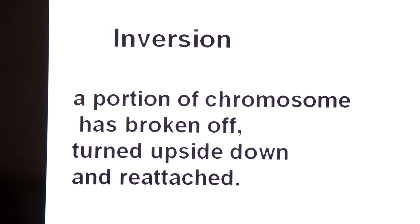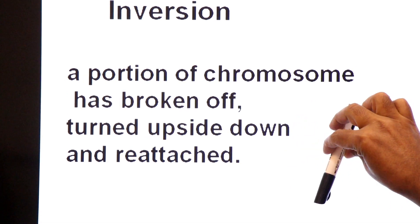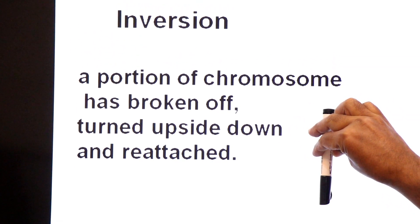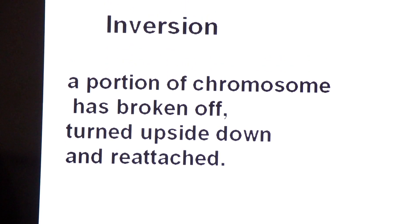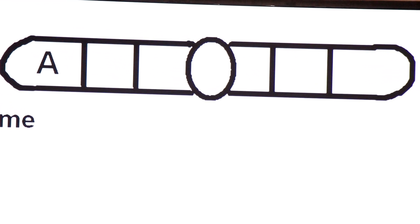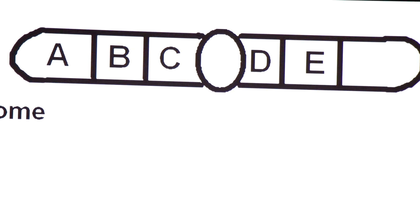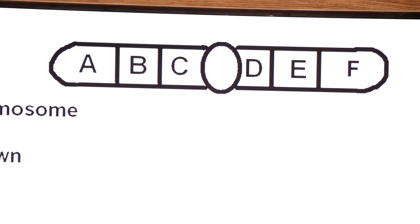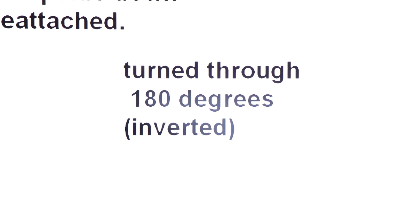The last type is inversion. In inversion, a portion of the chromosome has broken off, turned upside down, and re-attached. This chromosome flips or turns over. Looking at a normal chromosome with segments A, B, C, D, E, and F, this chromosome is turned through 180 degrees.